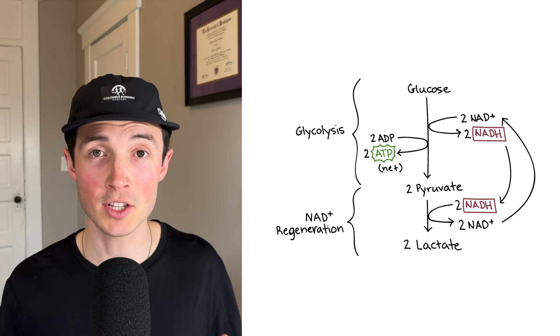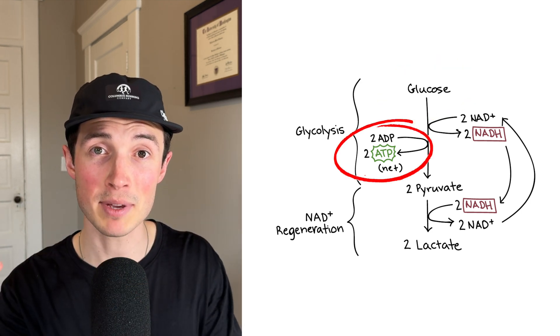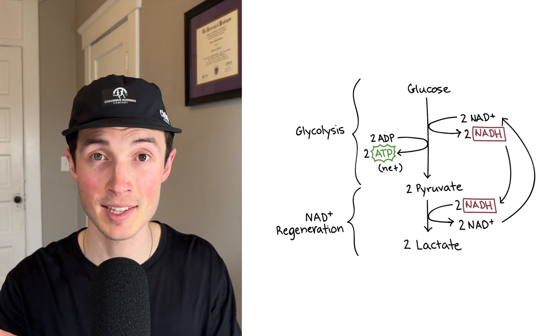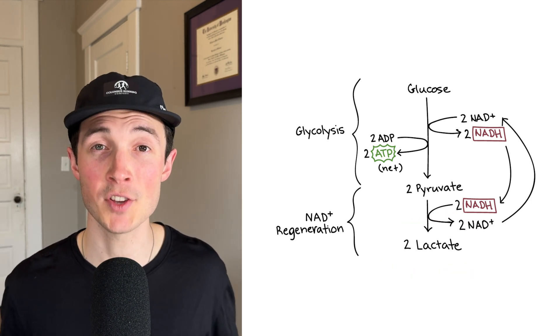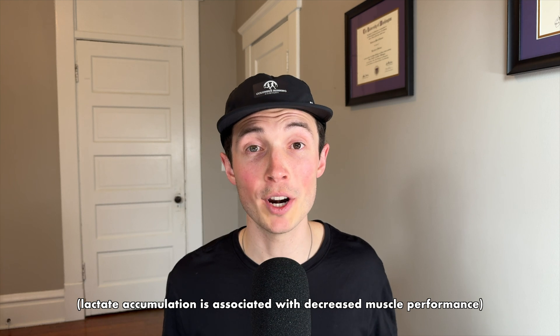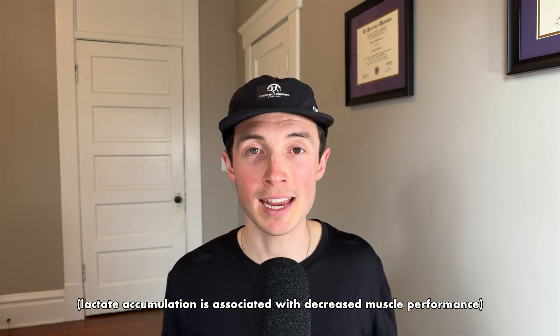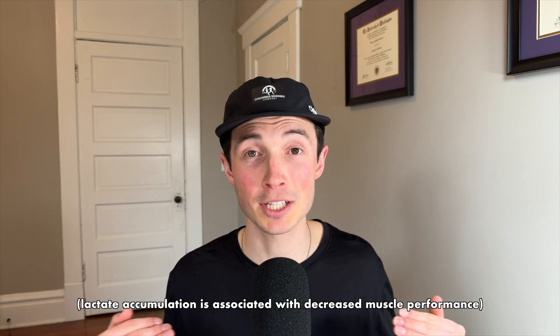Our body can synthesize or create ATP very, very quickly when using glucose as its fuel source. And out of these two fuel sources, glucose and fat, we use way more glucose. When our body is using glucose to create ATP, lactate or lactic acid is always produced in that process. When we're using only a little bit of glucose, we only produce a little bit of lactate. And at lower intensities, our body is able to clear the lactate so it doesn't actually build up.